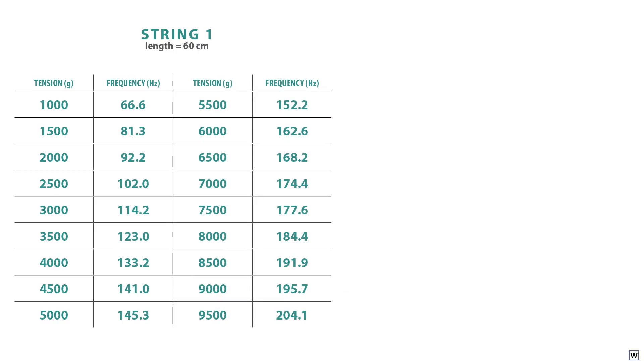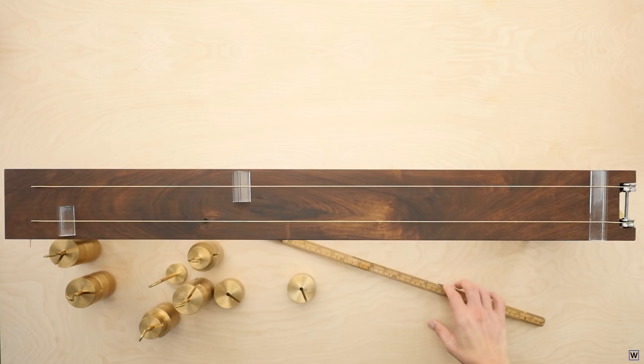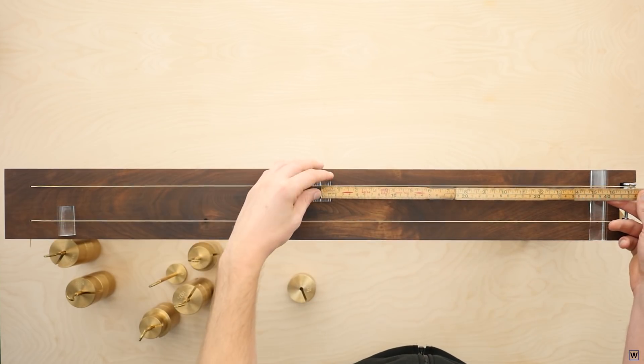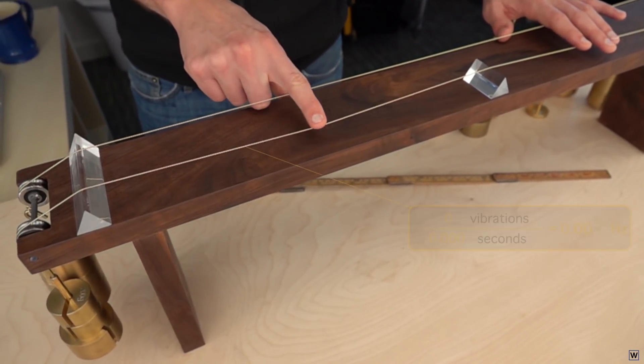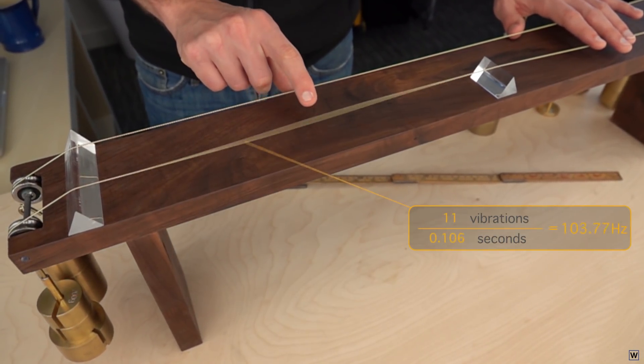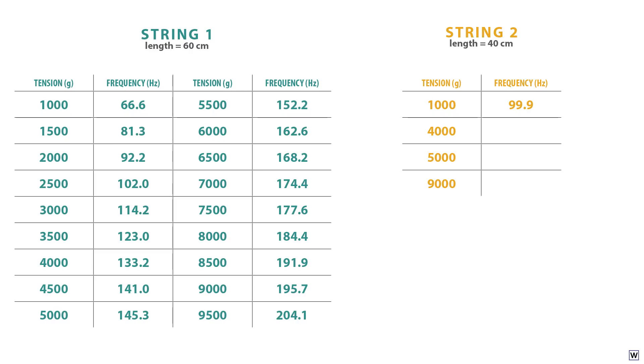Just as before, we'll go ahead and set up a second string configuration that we'll use to test our guesses next time. We'll make the length of this string 40 centimeters, and take one observation at a tension of 1,000 grams. And next time, we'll use our educated guess to make frequency predictions for this string at tensions of 4,000, 5,000, and 9,000 grams.